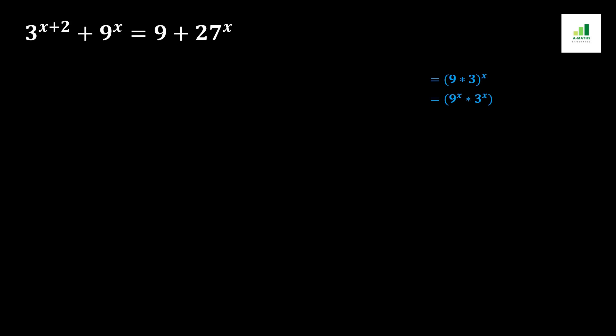Welcome to AMS. Today in this video we are going to solve a question: 3 to the power x+2, plus 9 to the power x, equals 9 plus 27 to the power x. You can see that our targeted variable x is existing inside the power value, which makes it look like a complicated question and most people think it is a difficult one, but you will see inside this video how easy it is.